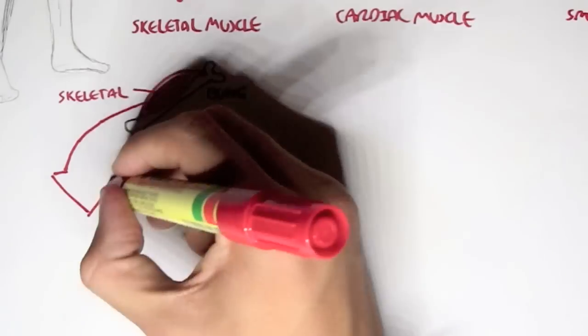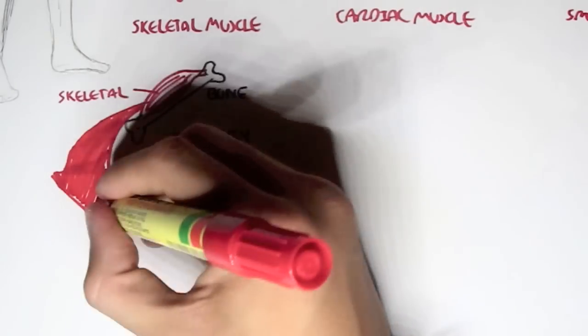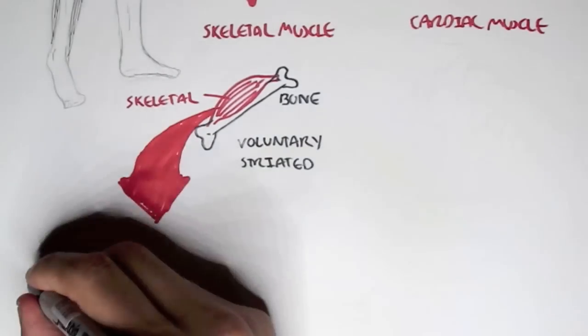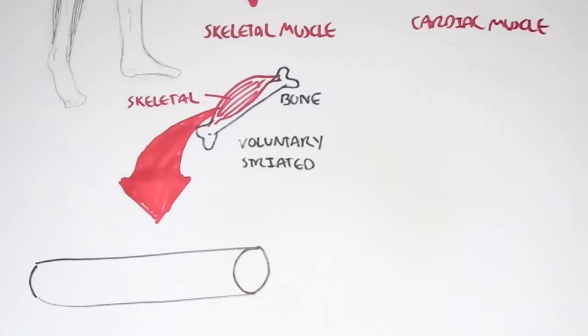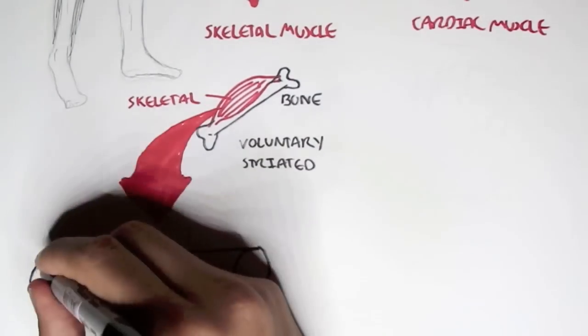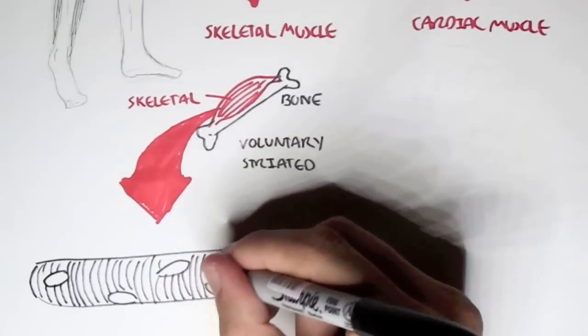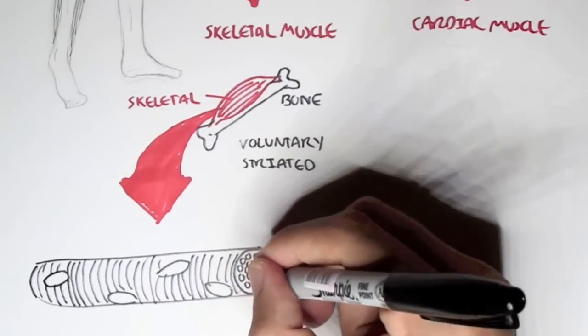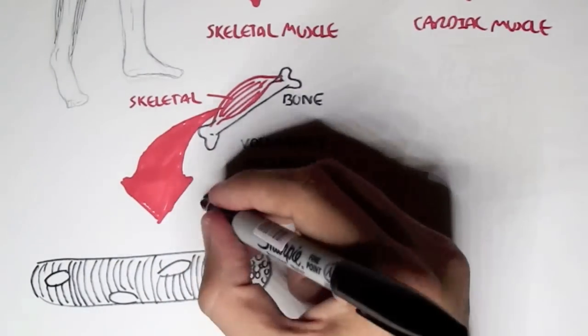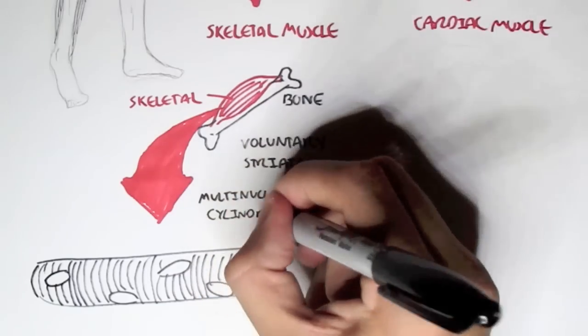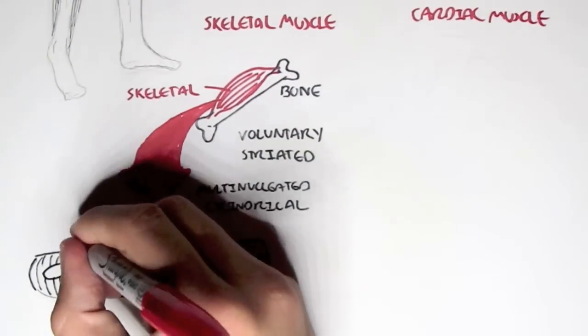If we zoom into this particular skeletal muscle, a skeletal muscle cell is cylindrical shape. As I mentioned, they're also striated, but another important feature of a skeletal muscle is that it is multi-nucleated, which means that it consists of multiple nucleuses. This is what differs skeletal muscle from, for example, cardiac muscle and smooth muscle.